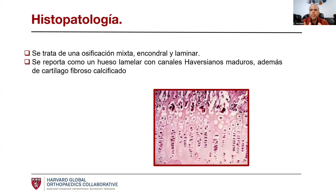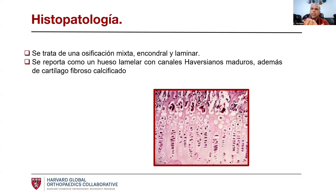Histopatológicamente es una osificación mixta endocondral y laminar, y se reporta un hueso lamelar con canales de Havers maduros, además de un cartílago fibroso calcificado. Esto normalmente empieza en la unión lateral de la estructura con el cuerpo vertebral en la parte posterior, va de la parte lateral hacia el centro, y después tiene un comportamiento lento pero progresivo hacia cefálico y caudal para formar las calcificaciones. La invasión al canal es distinta y así también lo es la sintomatología que van a presentar.